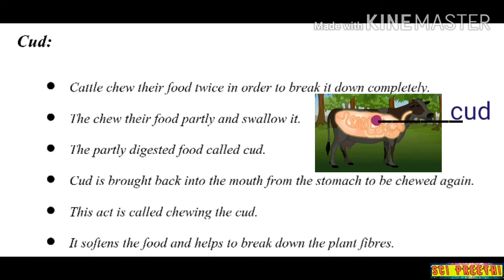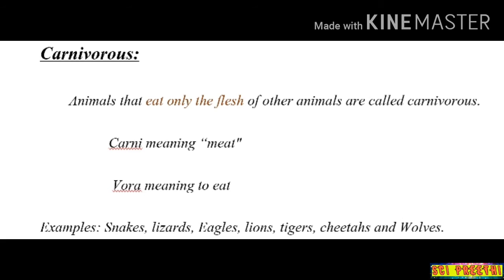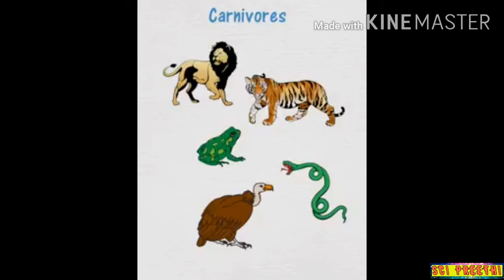When you closely observe cows, buffaloes, goats, and sheep, they chew their mouths many times — this is because the digestion process requires them to chew their food twice. The next feeding habit is carnivorous. Carnivorous animals eat only the flesh of other animals. The term comes from 'carni' meaning meat and 'vora' meaning to eat. Examples of carnivorous animals are snakes, lions, frogs, eagles, and tigers.